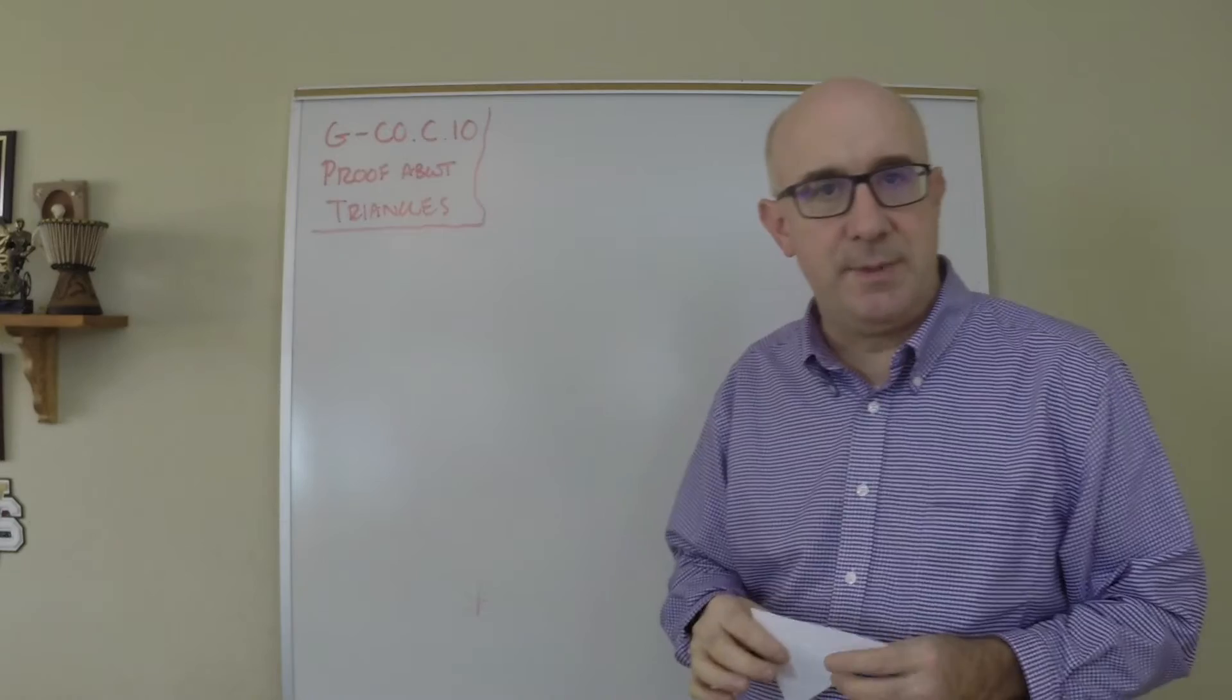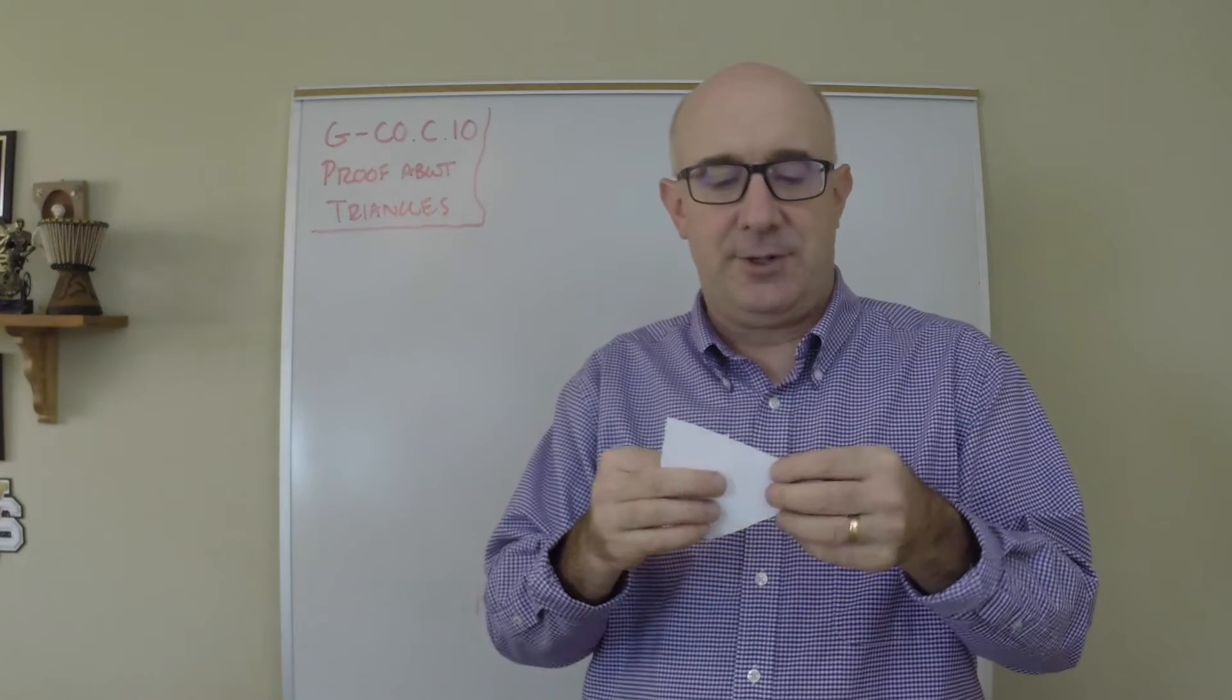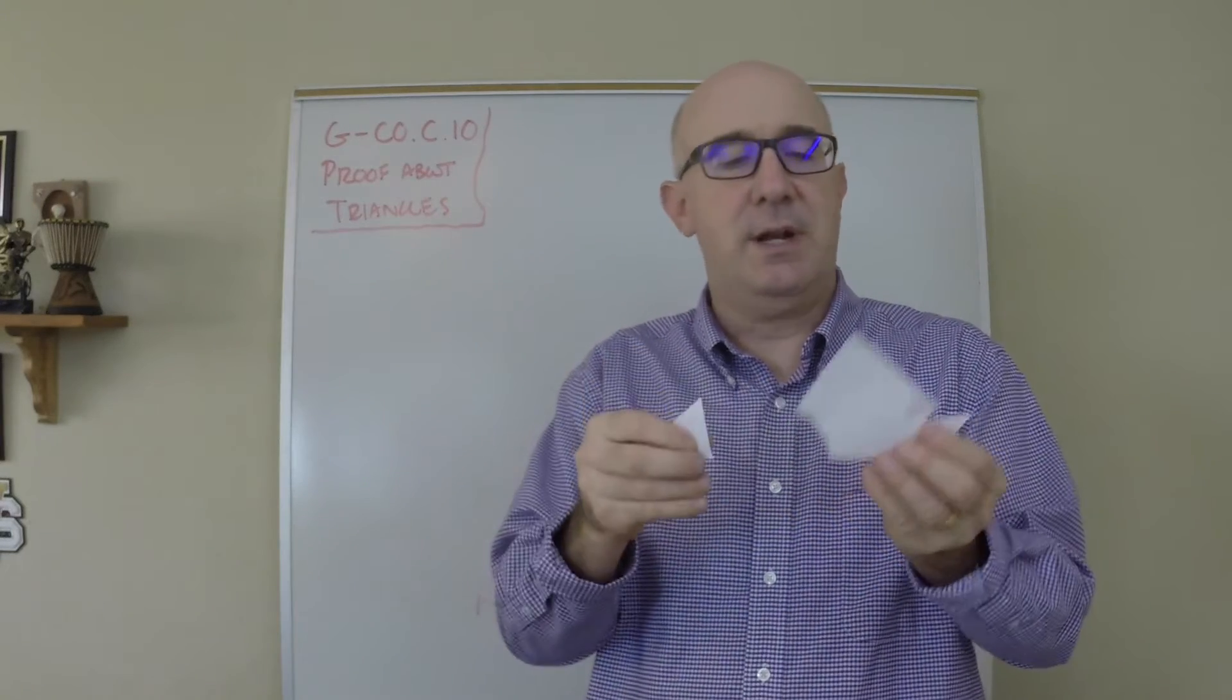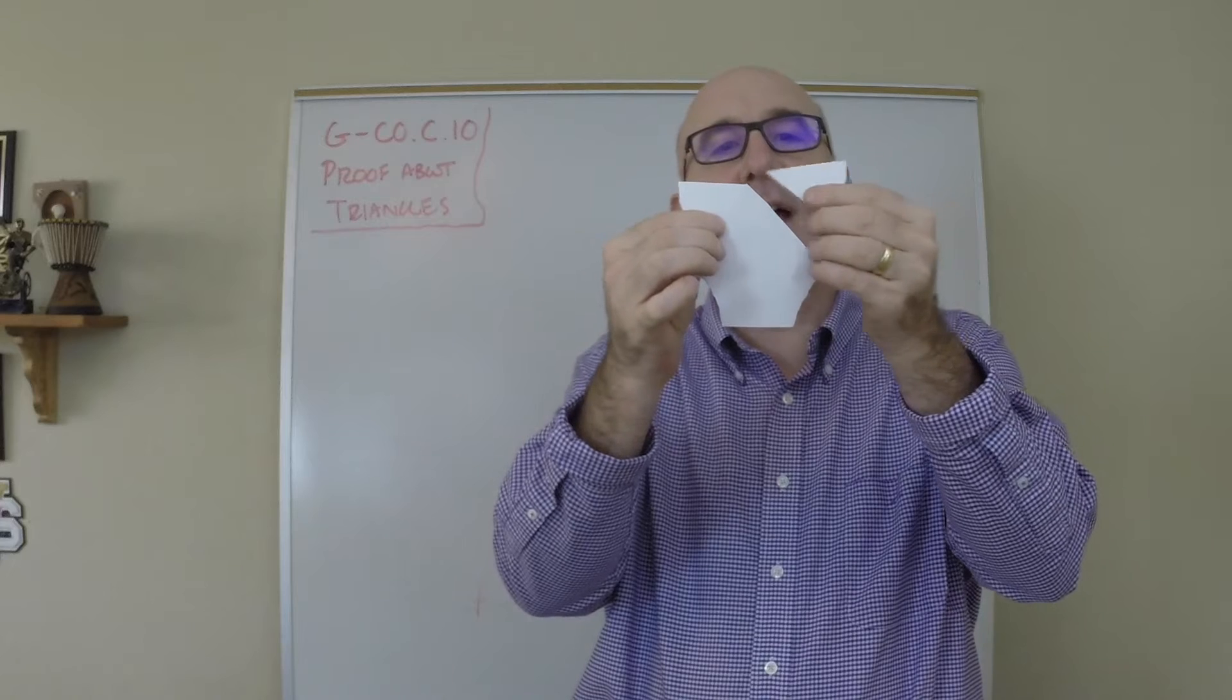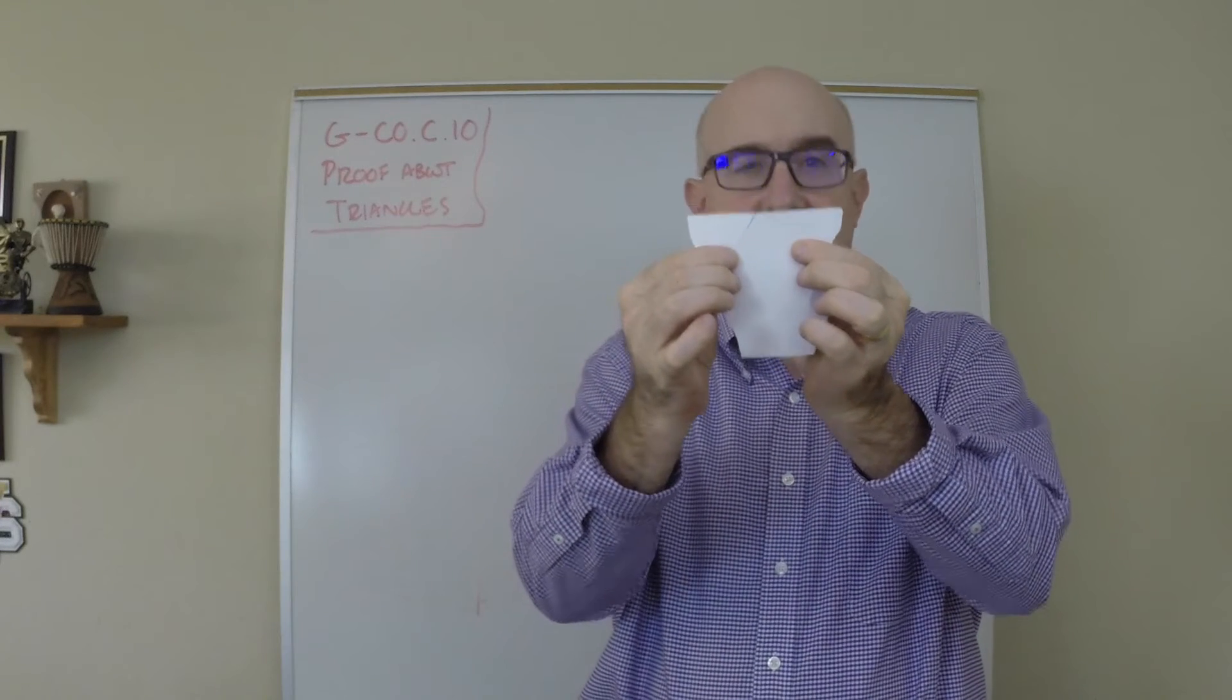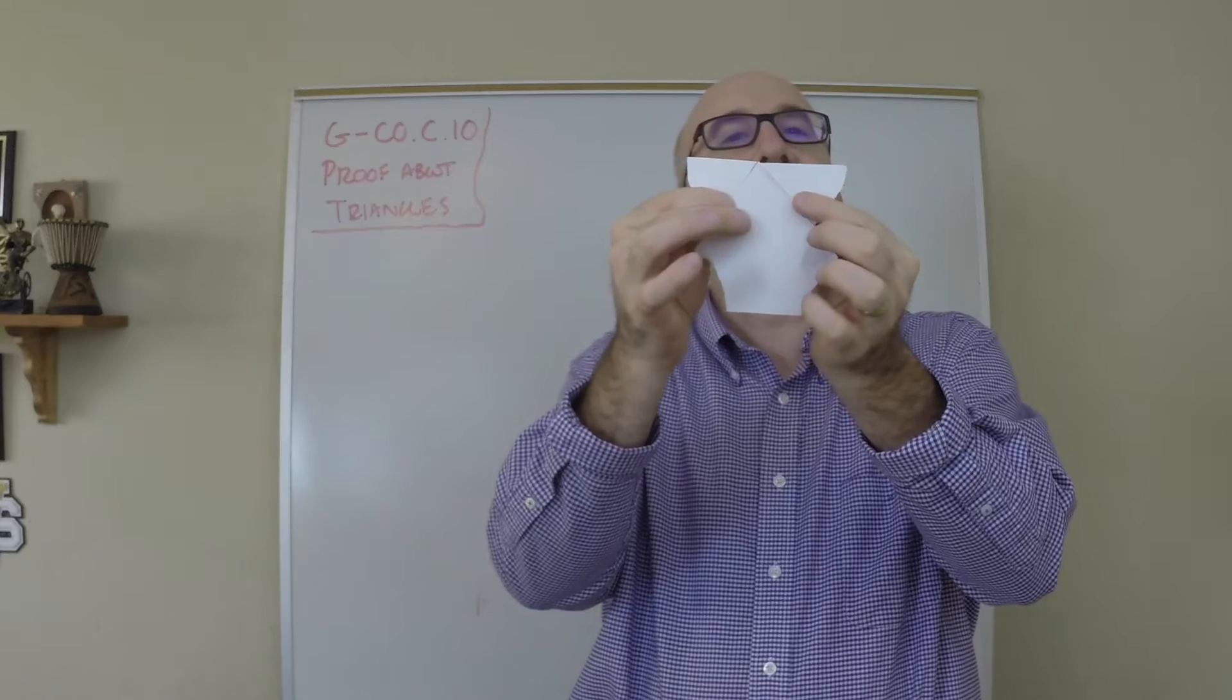The classic thing that's always been done is for a teacher to rip off the corners of the angles of the triangle, and if I can maybe hold it up here so I've got them, you'll find that if you put those three angles all at the same vertex they will form a straight angle of 180 degrees. And so informally we learn that the three angles together make 180 degrees.